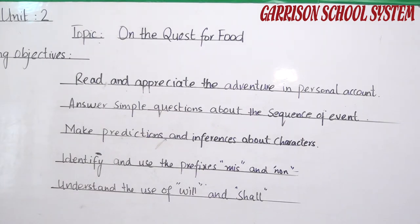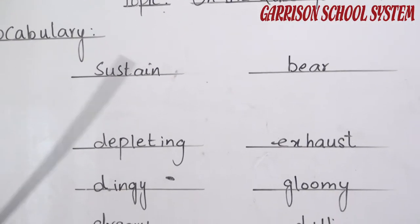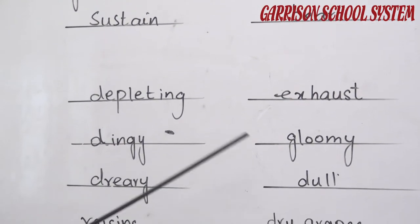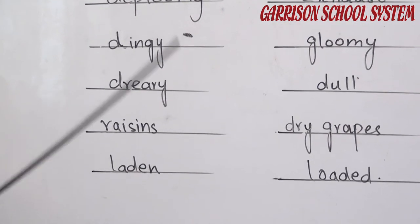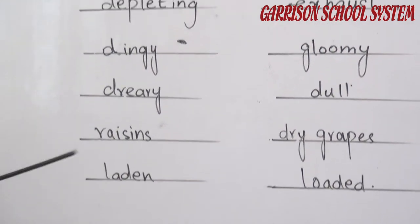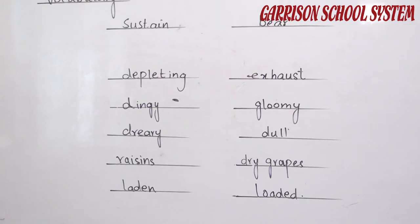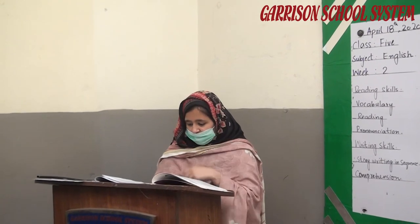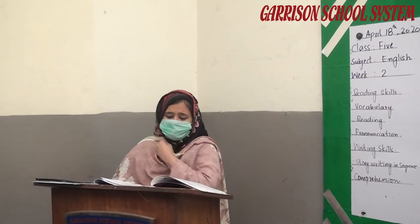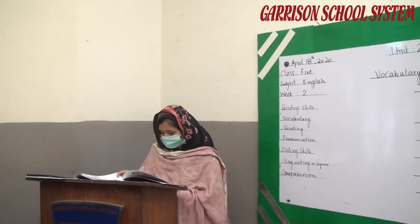Now coming to the vocabulary — you are going to learn new words in this text. The new words include: 'sustained' meaning weird, 'depleting' meaning exhaust, 'dingy' meaning gloomy or dreary or dull, 'resist,' 'dry grapes,' and 'laden' meaning loaded. What you have to do is take out your pencils and underline these words in the text given to you on pages 20 and 21. Next, coming to the exercise — reading comprehension on pages 22 and 23, where you will find your answers.